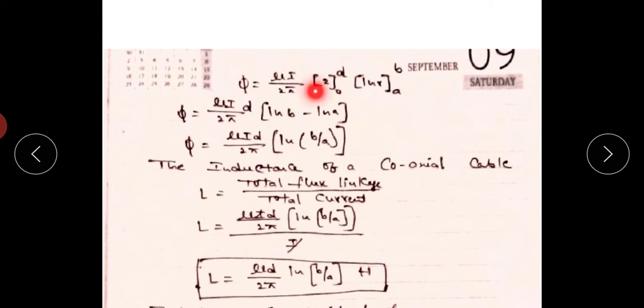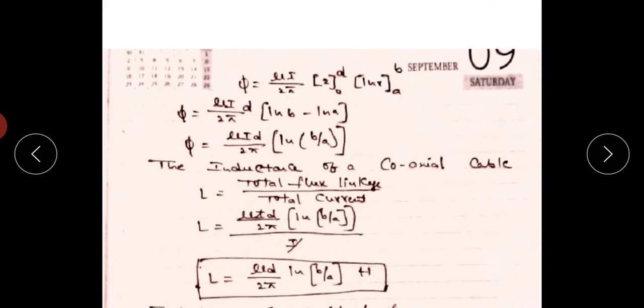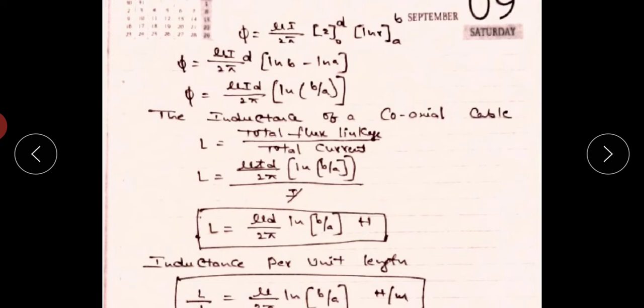Evaluating the integral: φ = μI / 2π · integral dZ (from 0 to d) · integral (1/R) dR (from a to b) = μI / 2π · d · [ln R] from a to b = μId / 2π · (ln b − ln a) = μId / 2π · ln(b/a). After cancelling I, the self-inductance L = μd / 2π · ln(b/a) henries.